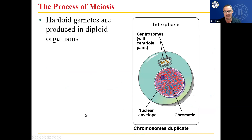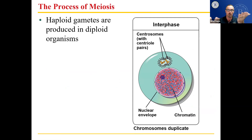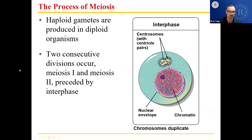The process of meiosis: haploid gametes are produced in diploid organisms. Put a big giant star here in your notes because that's a review question. Haploid gametes are produced in diploid organisms — that's a true or false statement, and the answer is true. We are diploid. We make haploid gametes so that we can hook up with another person and make a baby. Two consecutive divisions occur — meiosis 1 and meiosis 2 — preceded by a single interphase.